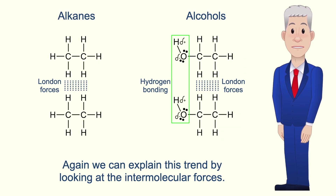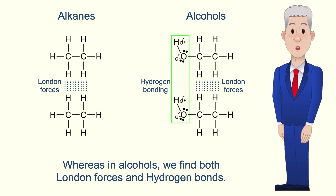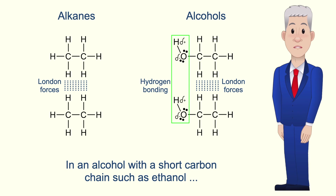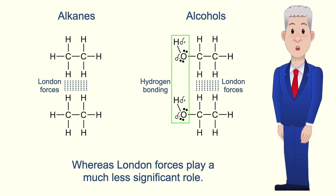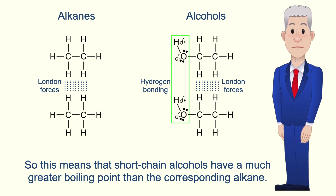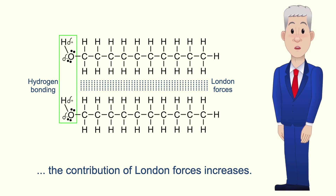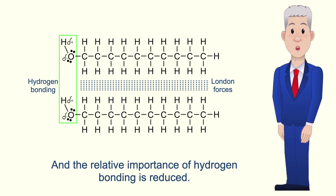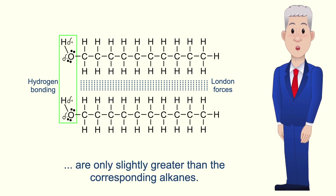Again we can explain this trend by looking at the intermolecular forces. In alkanes we only find London forces, whereas in alcohols we find both London forces and hydrogen bonds. In an alcohol with a short carbon chain such as ethanol, the major intermolecular force is hydrogen bonding due to the alcohol functional group, whereas London forces play a much less significant role. So short chain alcohols have a much greater boiling point than the corresponding alkane. However, in alcohols with long carbon chains such as decan-1-ol, the contribution of London forces increases and the relative importance of hydrogen bonding is reduced. So the boiling points of long chain alcohols are only slightly greater than the corresponding alkanes.